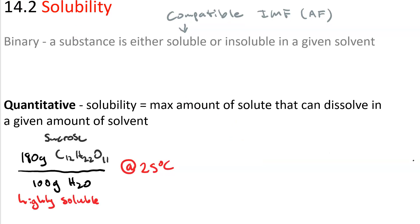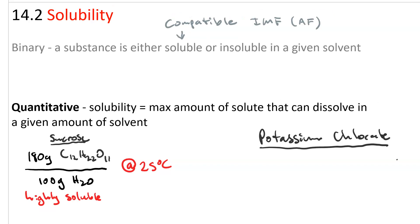We should also note that solubility depends on temperature. Some substances become more soluble as the temperature goes up. The solubility of sucrose of 180 grams per 100 grams of water is recorded at 25 degrees Celsius, also known as room temperature. For potassium chlorate, however, at 25 degrees Celsius, you can get 9 grams of KClO3 to dissolve in 100 grams of water.